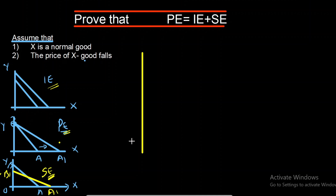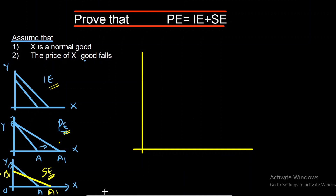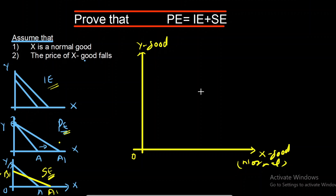Now moving to the main topic: we have to prove that price effect is equal to income effect plus substitution effect. First, draw the axes — X good on the X axis (a normal good) and another good Y on the Y axis. We are only interested in the impact on X good. Draw an initial budget line AB. Since we assume price of good X falls, we now show what happens to substitution effect.